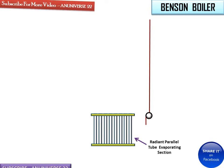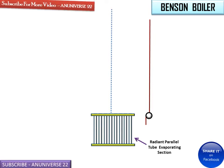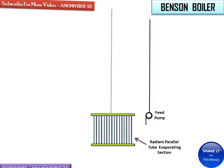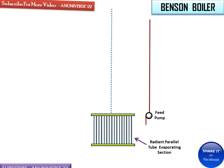This line shows the supplying pipe of the feed pump, and this line shows the path of the flue gases from bottom to top, and this is the feed pump. The Benson boiler is a forced pumped water tube boiler, and the water enters into the boiler at critical pressure. A feed pump is used to pump the water into the boiler.